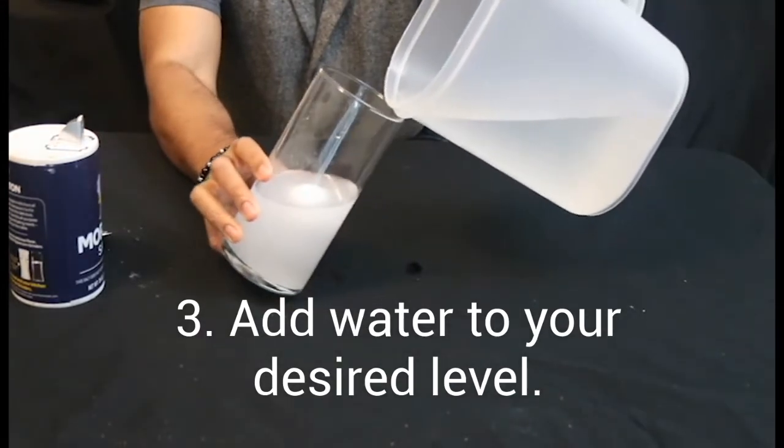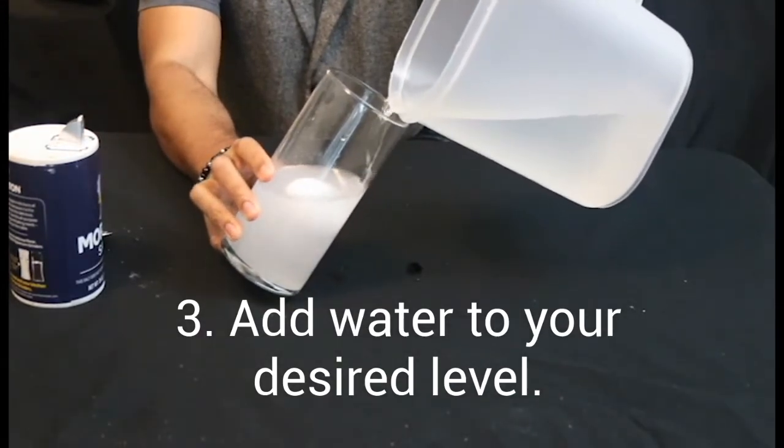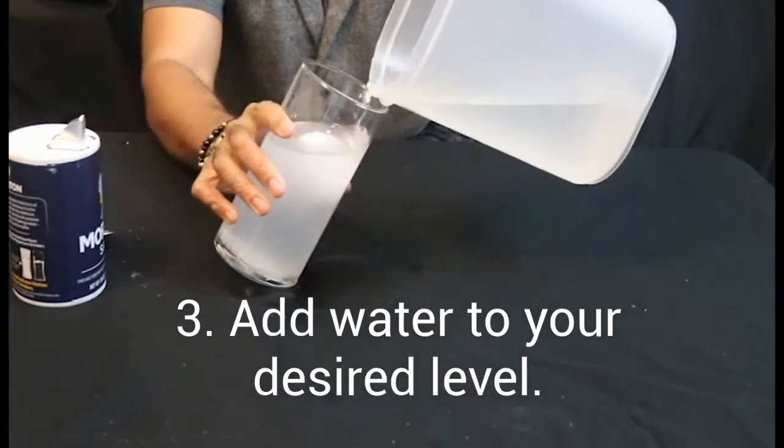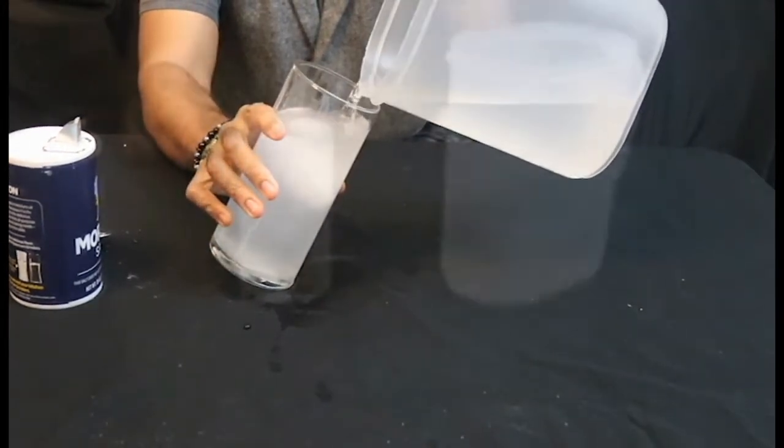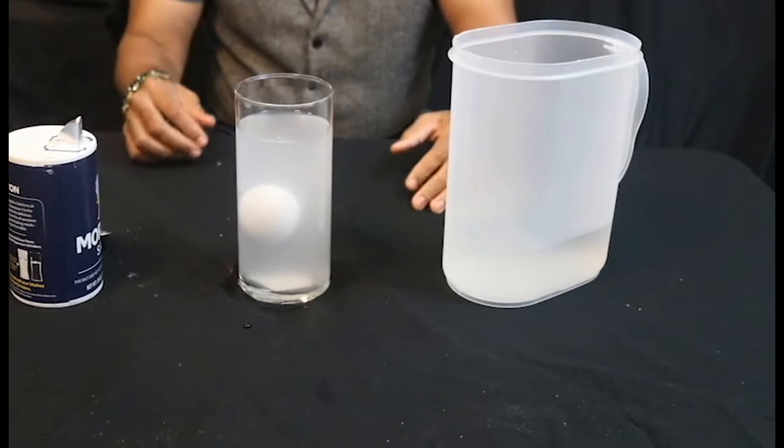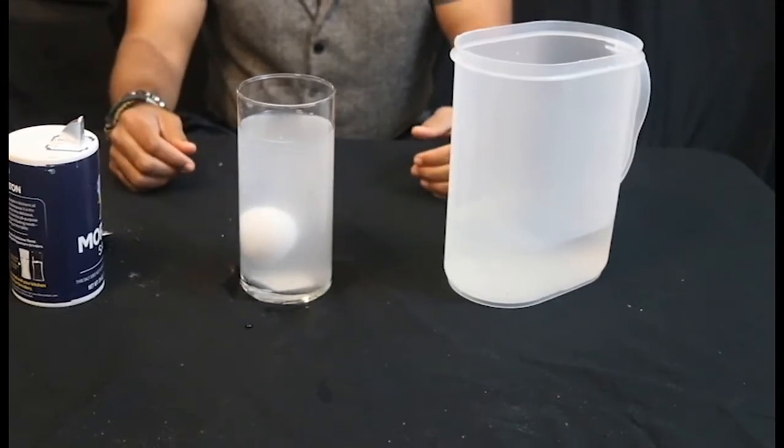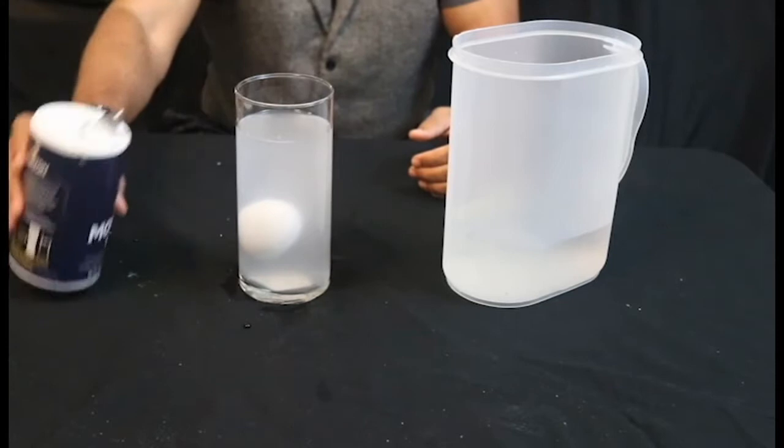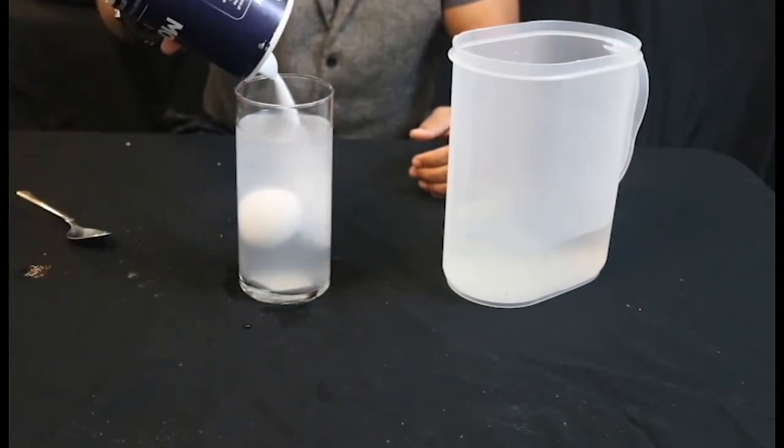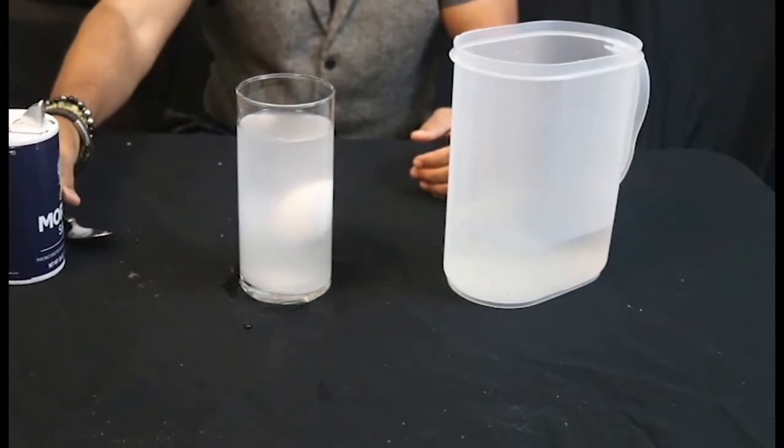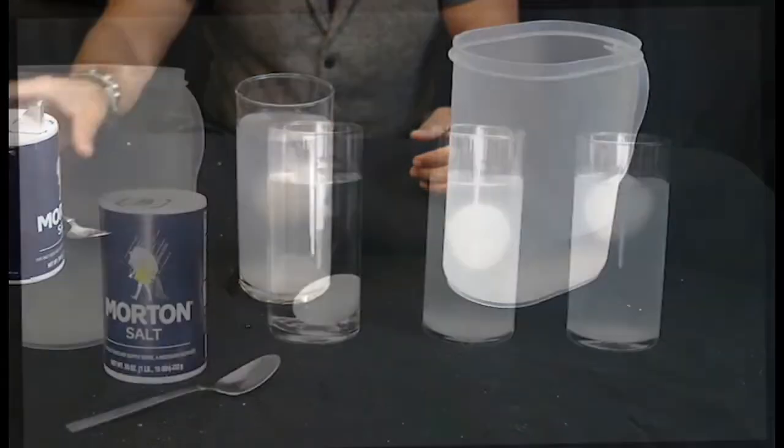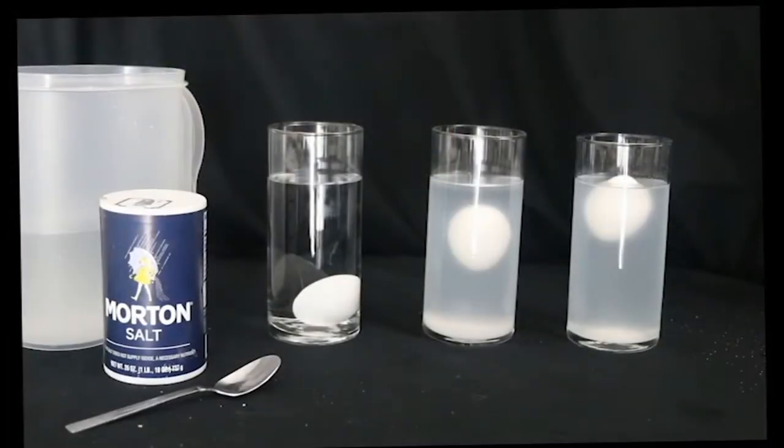Then, carefully add water to your desired level, preferably the same level that you have the jar with the water in. You will see that the egg is suspended between the surface of the water and the bottom of the tank. To make the water more dense, add salt to get your desired effect.